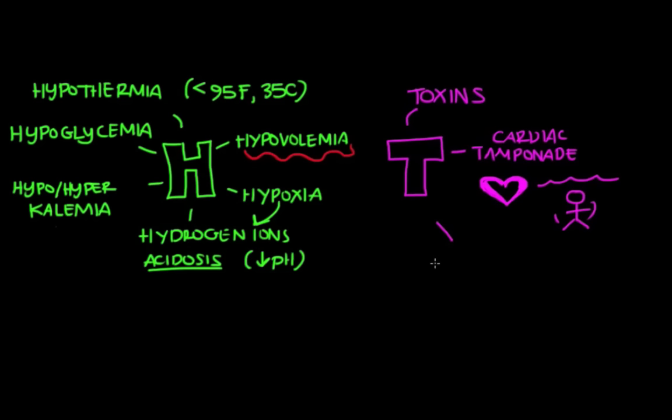And the next T is something called tension pneumothorax. So in the chest wall, the lungs are surrounded by a pleural lining. So there's a space created called a pleural space between the lungs and the chest wall. In a tension pneumothorax, air can somehow enter this pleural space, and this is usually because of some sort of trauma to the chest.